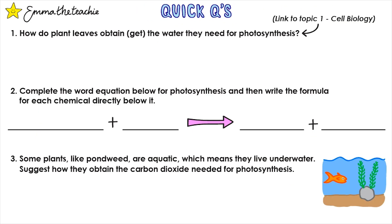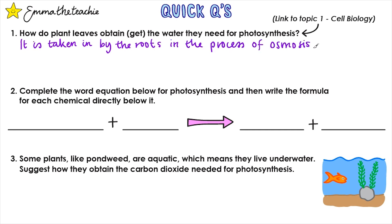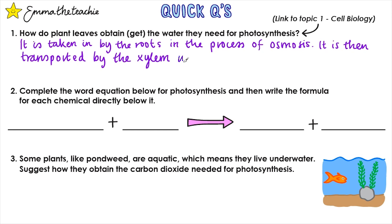Let's check what you've understood. Pause the video and try these quick questions; when you're done, press play to go over the answers. Question one: how do plant leaves obtain the water they need for photosynthesis? Water is taken in by the roots in the process of osmosis and is then transported by the xylem up through the plant to the leaves. You could expand your answer to say this is possible because of the transpiration stream — the loss of water from the stomata in the leaves causes more water to be drawn up through the xylem.